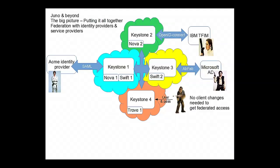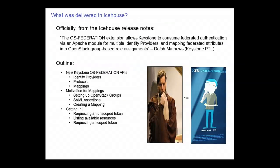When we connect all these together, we start forming a cohesive federation of rebel alliances, where we can speak different protocols to authenticate to a cloud and get access across multiple clouds. In many cases there aren't any client changes needed — you see Chewbacca using the standard username and password as they do today, not needing to federate directly into the cloud. Now I'm going to turn it over to Brad Topol to talk about what was delivered within Icehouse.